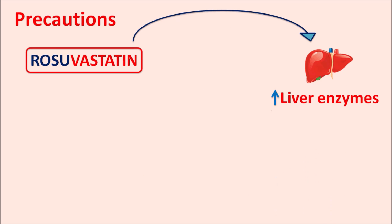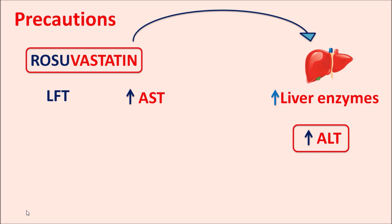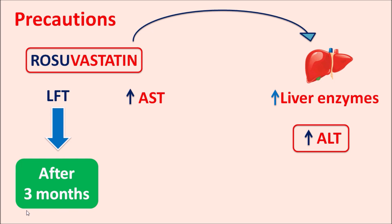Rosuvastatin can also affect the liver, increasing liver enzymes — specifically alanine transaminase (ALT) and aspartate transaminase (AST). When this drug is prescribed for longer periods, liver function tests should be performed to assess any hepatic damage. Elevation of liver enzymes can be observed after approximately three months of treatment, so liver function tests should be done at that point. If liver enzymes rise to three times their upper normal limit, the dose of rosuvastatin should be reduced immediately to prevent further liver damage.